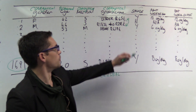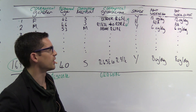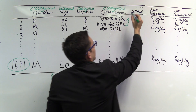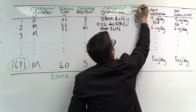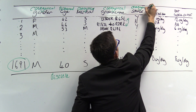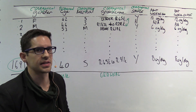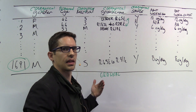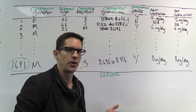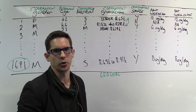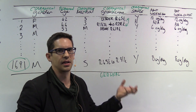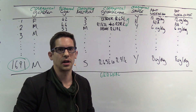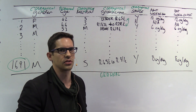Next is the smoke variable. The values are yes or no, making this clearly categorical. Is it ordinal? As tempting as it is to say not smoking is better than smoking, we can't give this a natural ordering — we can't say one is higher or lower than the other. So smoking yes/no is just a plain categorical variable.